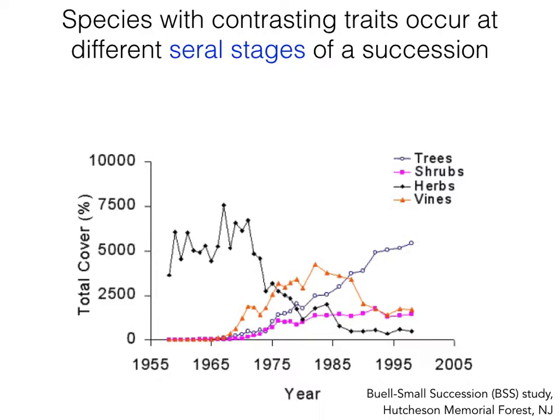Let's take a look at what's going on here. This broadly reflects the chronosequence I just explained. The data are from abandoned fields, and what's being quantified is total percent cover for four different categories of species: trees, shrubs, herbs, and vines. As indicated in the previous slide, herbs are the dominant types of species early in succession — they are the first establishing species. First annual herbs and grasses, followed by biennial and perennial species, begin to colonize and establish. We call these pioneer species — the first arrivals.